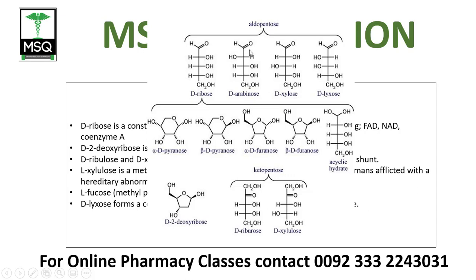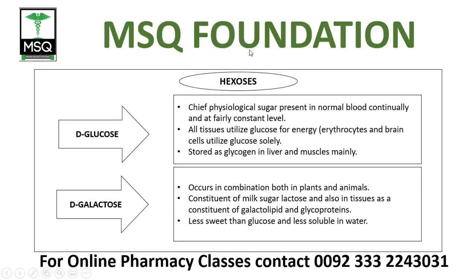D-glucose is present in normal blood continuously and at a fairly constant level — we call it blood sugar. All tissues utilize glucose for energy; erythrocytes and brain cells utilize glucose solely. It is stored as glycogen in liver and muscles. Glycogen in the liver is kept in reserve so that when you have not eaten and energy is needed, glycogen converts back to glucose to provide energy.